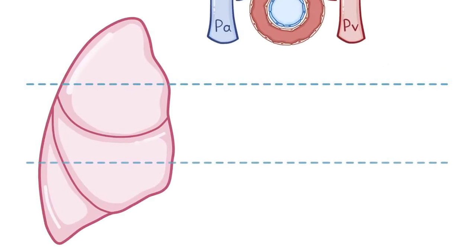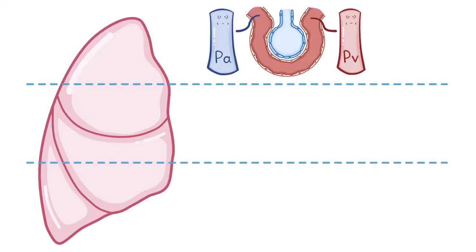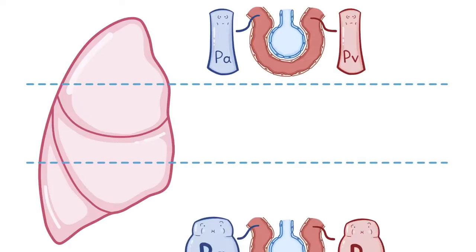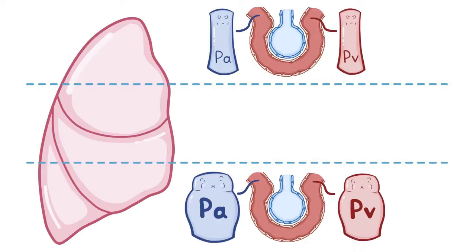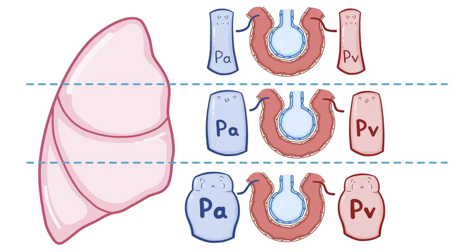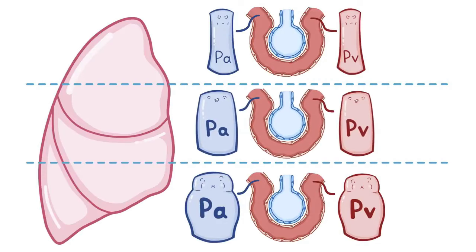At the apex of the lung, pressure in the arterioles and venules are relatively low. At the base of the lung, pressure in the arterioles and venules are relatively high, and in the middle of the lung, the pressures are somewhere in between. Because the pressure in the alveoli is constant, the relationship of the pressure in the arterioles and venules with respect to alveolar pressure changes, and it's this relationship between these three that determines the zones of the lungs.